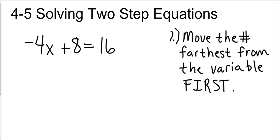I'm going to move the number farthest from the variable first. If I have to move the negative 4 and the 8, which one is farthest away from the variable? Well, the negative 4 is connected, and the 8 is farthest away. So, how do I move a positive 8 on my scale to the other side? The opposite of positive is subtraction. I'm going to subtract 8 to the other side. Positive 8 minus 8 is going to cancel. That leaves me negative 4x is equal to 16 minus 8. 16 minus 8 is 8.